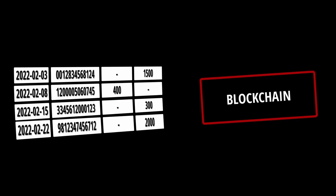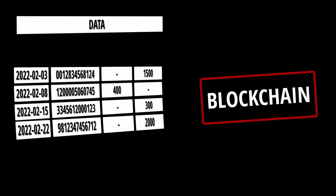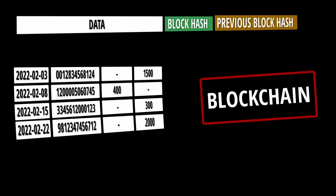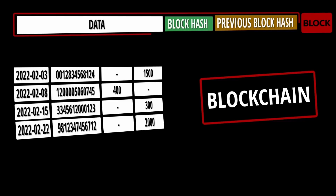Let's now see how blockchain will make it difficult for the hacker. In blockchain, a block will contain data — in our example, bank transactions, but it could be any data depending upon the use case. For this data, we need to generate a hash. Hash is like a fingerprint for data, which means any change in data will generate a different hash. Apart from data and hash, we also need the previous block hash. So the data, the hash, and the previous block hash all together will form a block in blockchain.